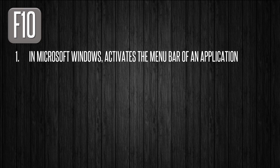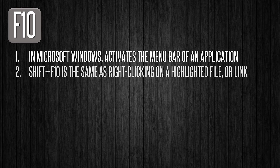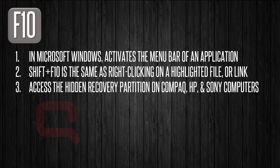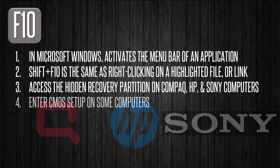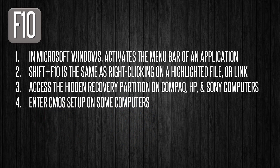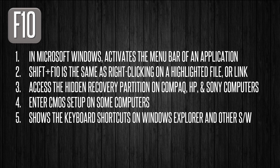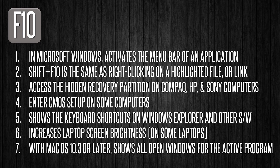F10 in Microsoft Windows activates the menu bar of an open application. Shift plus F10 is the same as right-clicking on a highlighted icon, file, or internet link. Very importantly, it can access the hidden recovery partition on compact HP and Sony computers. As with F1 and F2, F10 enters the CMOS setup in some computers. It also shows the keyboard shortcuts in Windows Explorer and other software. With macOS 10 or later, it shows all open windows of the active program.